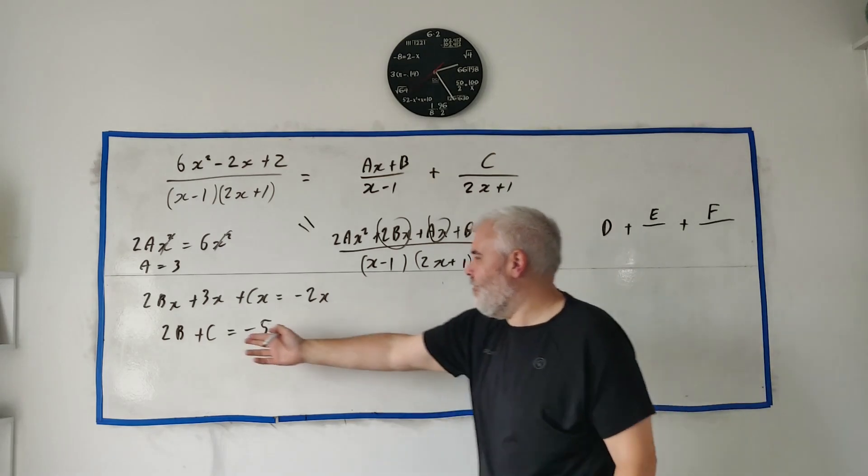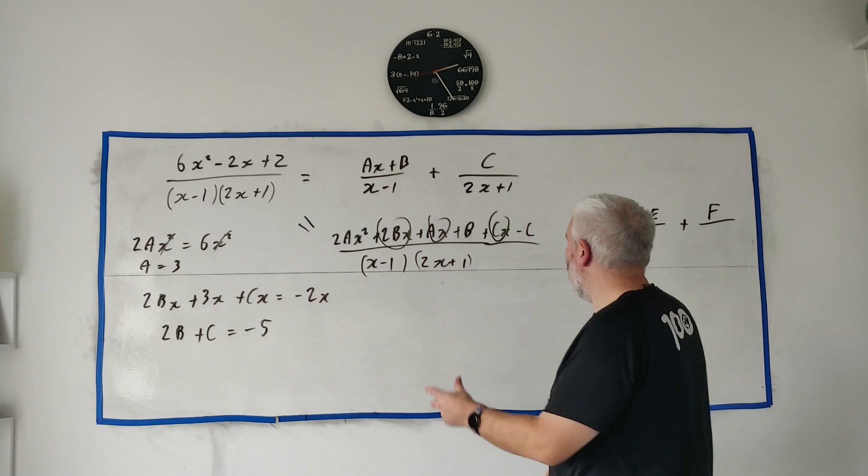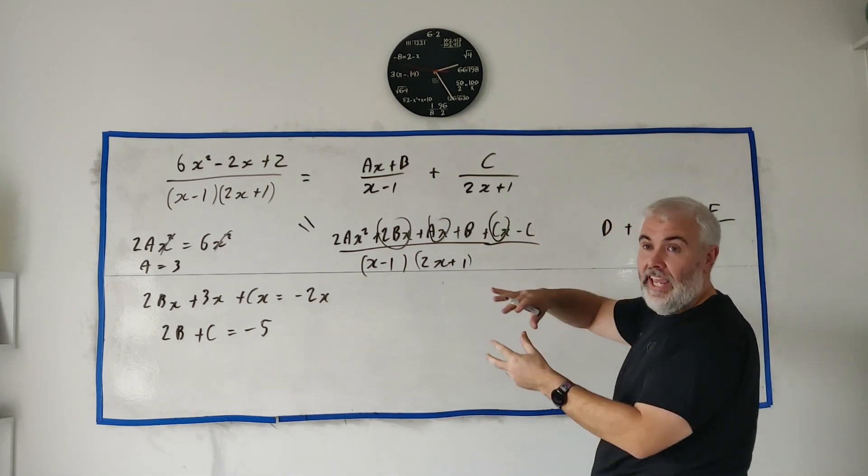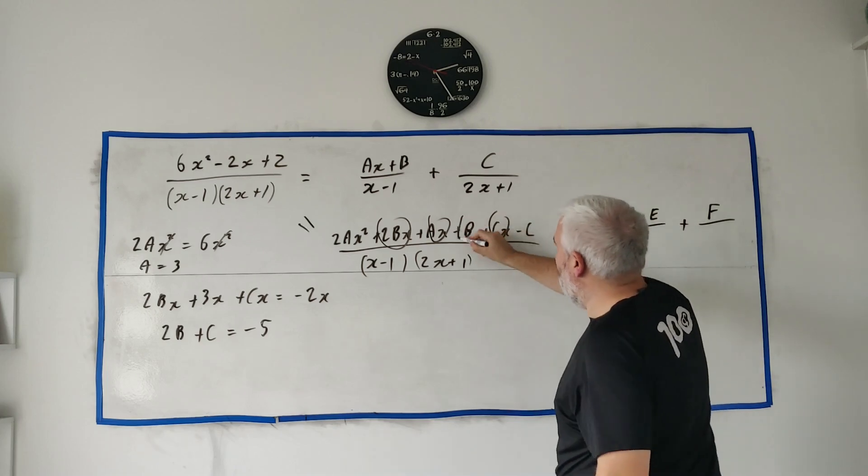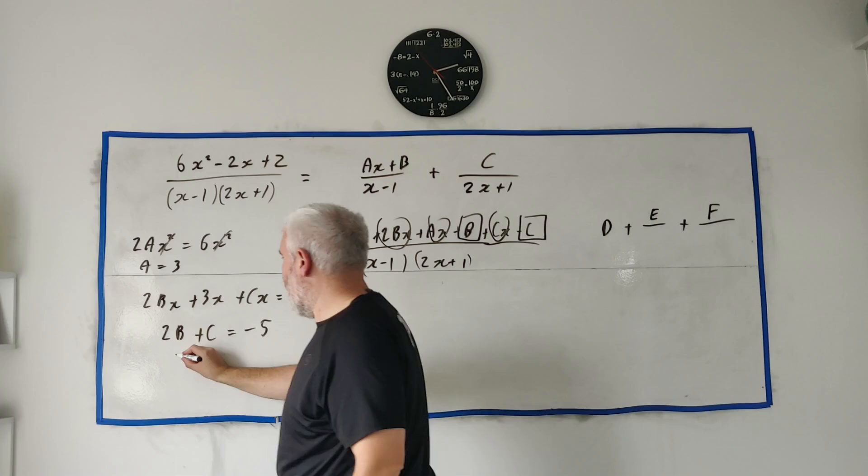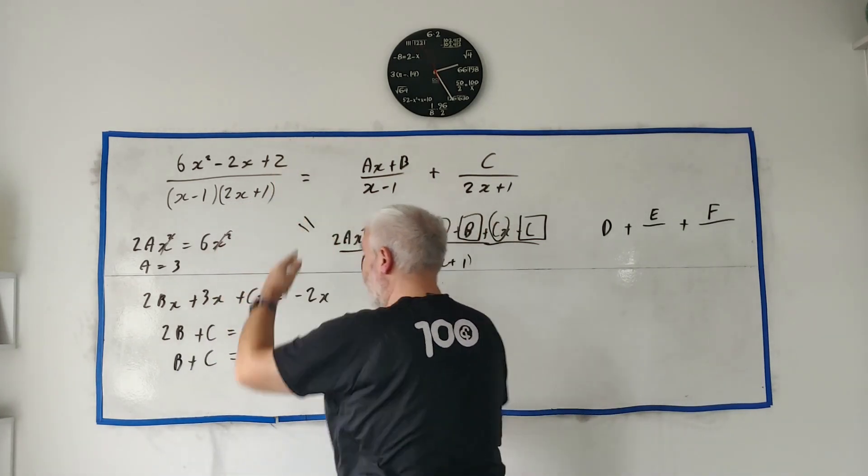Can't do anything more there. There's infinite answers. If you give me a b I'll just tell you what c is but we can stay going. We can combine all the things with x to the power 0 or no x. That's this b and this c. That tells us that b plus c is equal to all the numbers over here and that's 2.